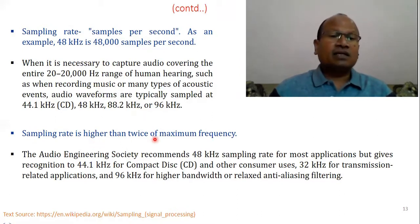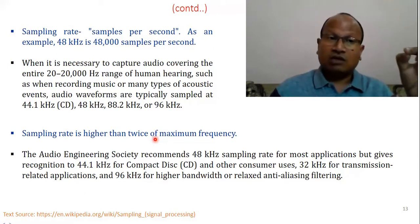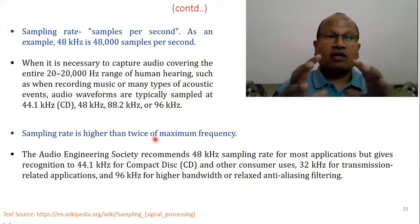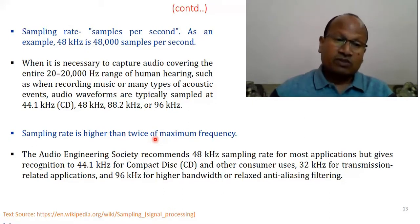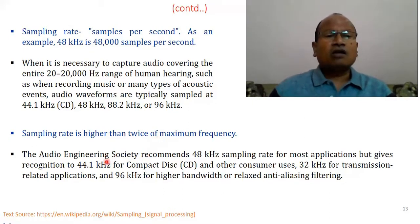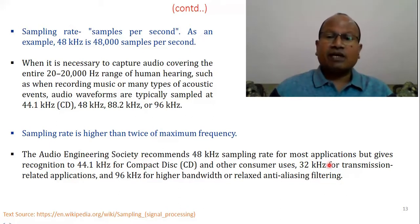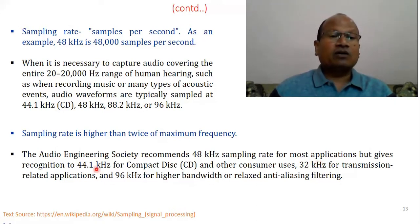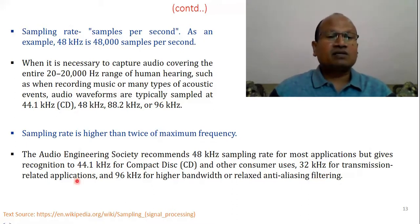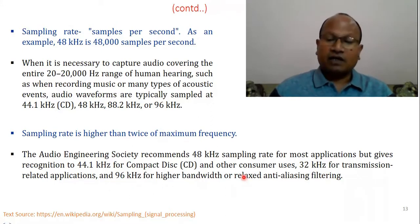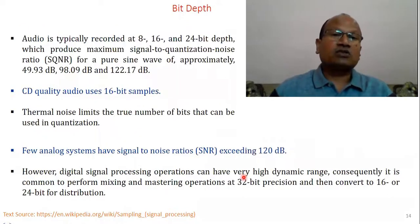The Audio Engineering Society has recommended 48 kHz sampling rate for most applications, giving recognition to 44.1 kHz for compact disc. Another consumer use is 32 kHz for transmission-related applications, and 96 kHz for higher bandwidth or relaxed anti-aliasing filtering requirements.